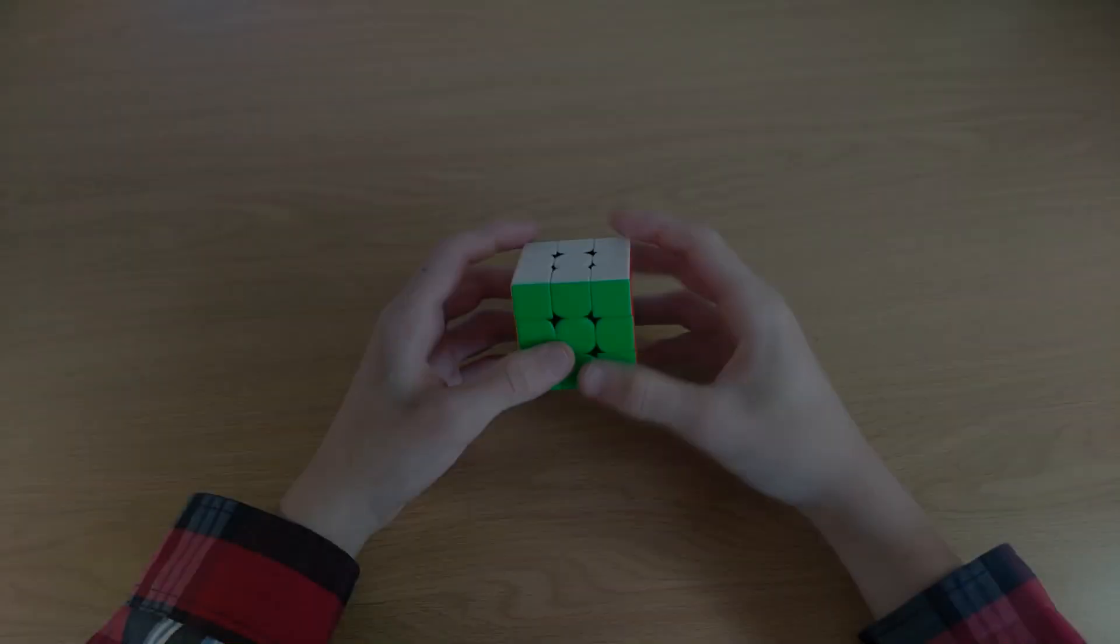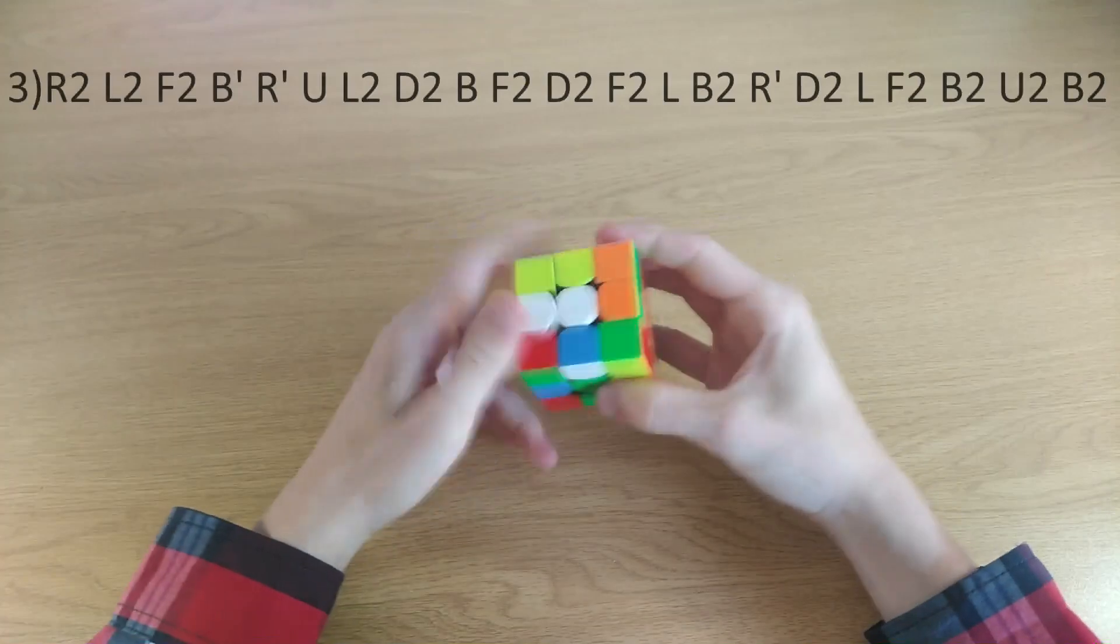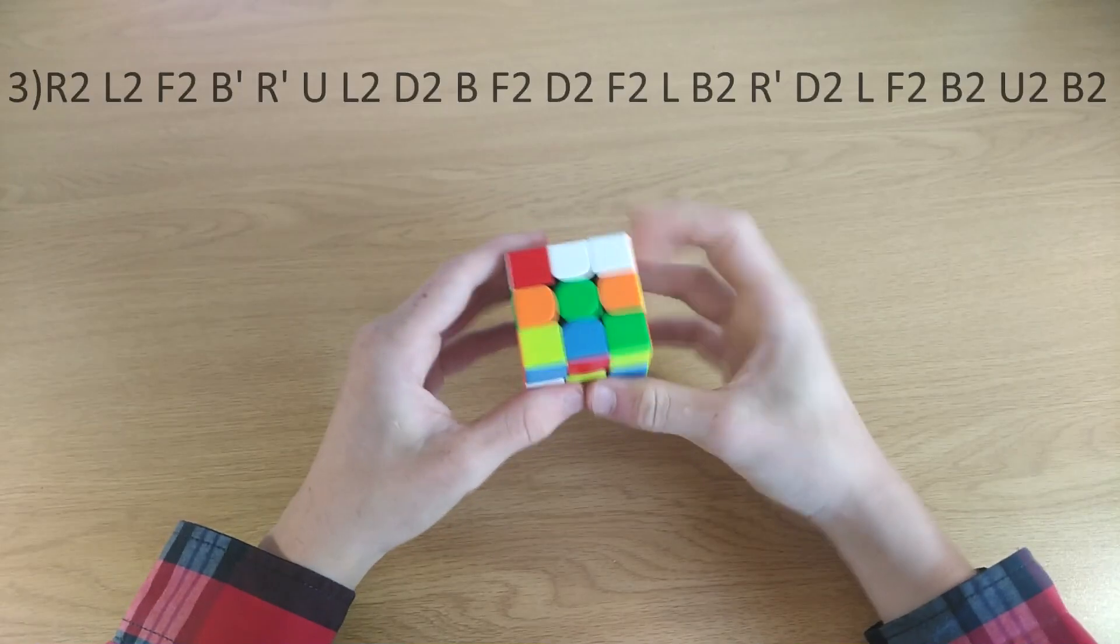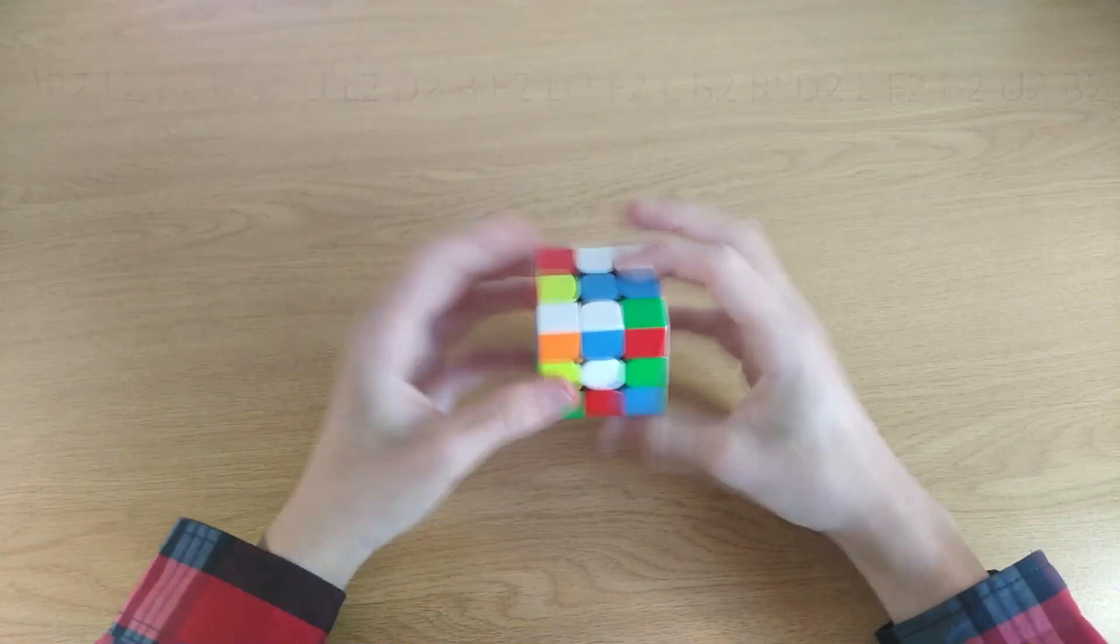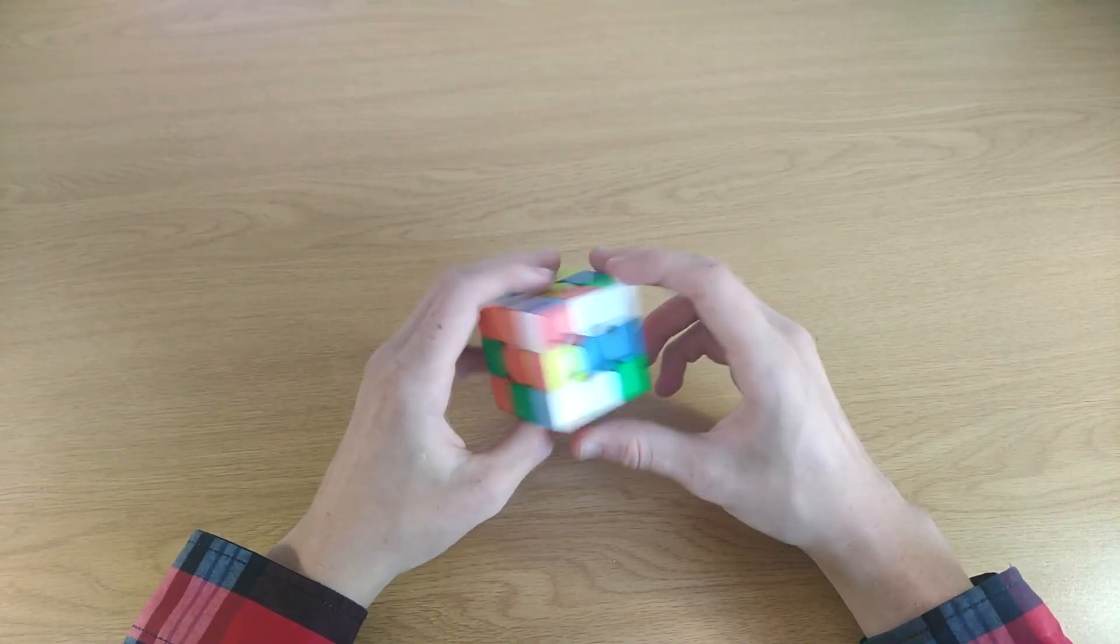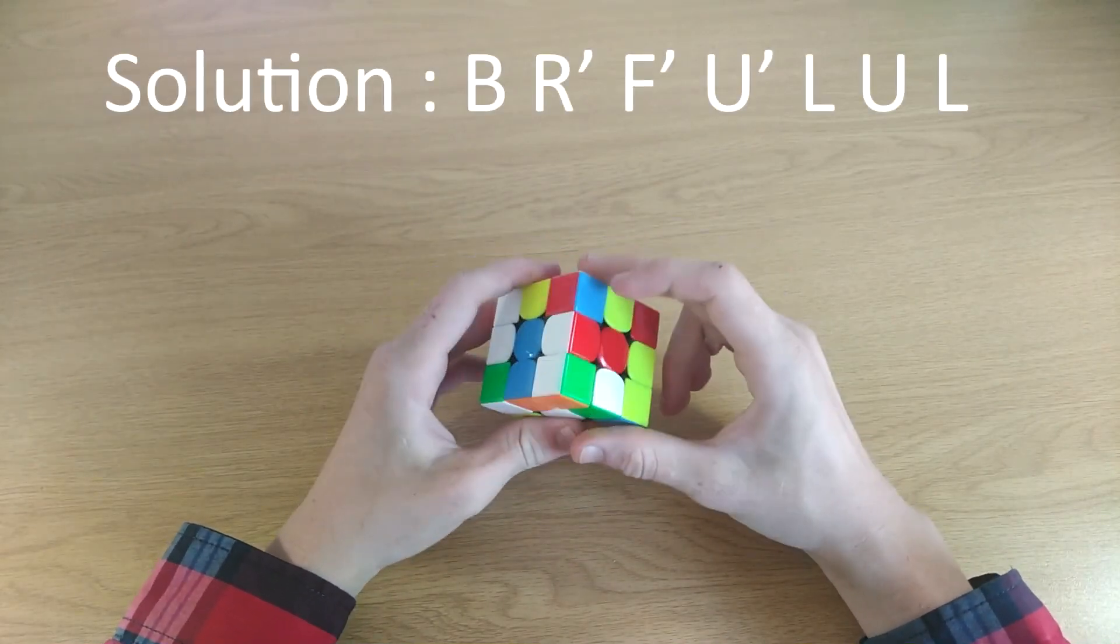Here's the third example. Okay, so in this specific example, we can do this really quickly. We can first of all do a B, like that.